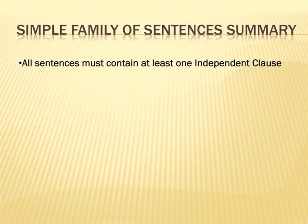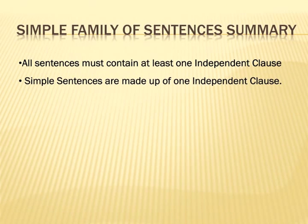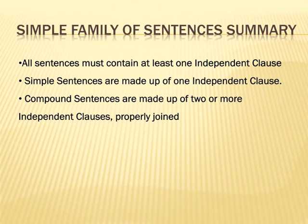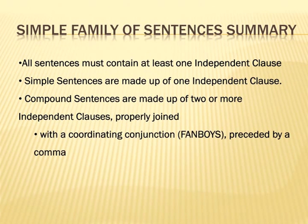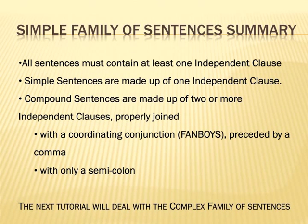To summarize: all sentences must contain at least one independent clause. If you don't have one, you only have part of a sentence — called a fragment — which we'll deal with in the third tutorial. Simple sentences are made up of one independent clause only. Compound sentences are made up of two or more independent clauses properly joined — either with a coordinating conjunction preceded by a comma, or when called for, just a semicolon. The next tutorial will deal with the complex family of sentences.